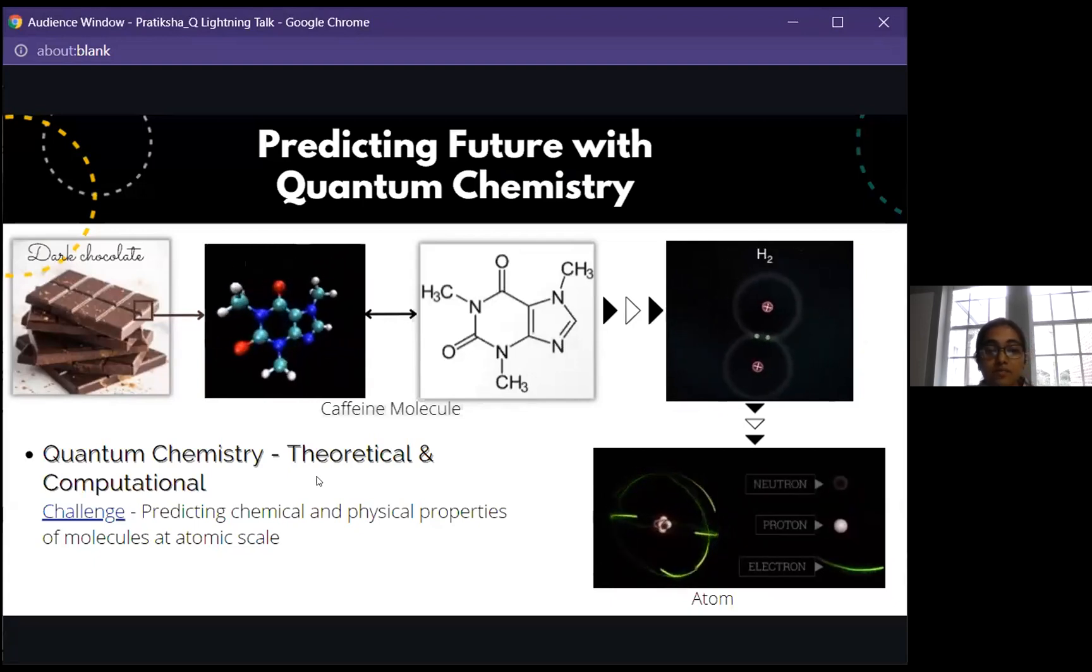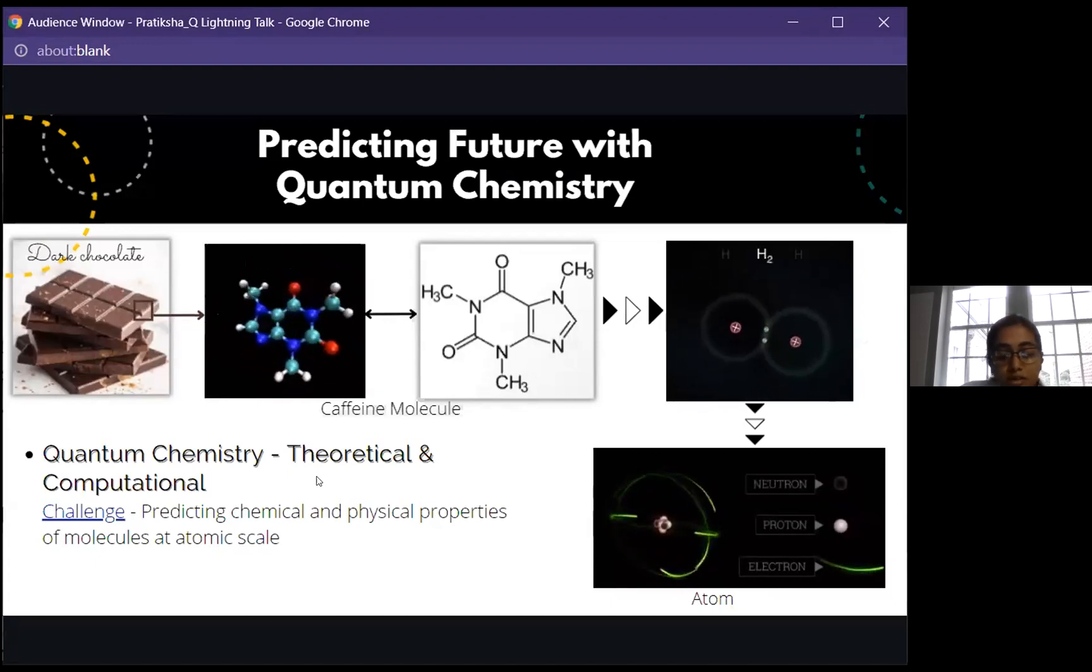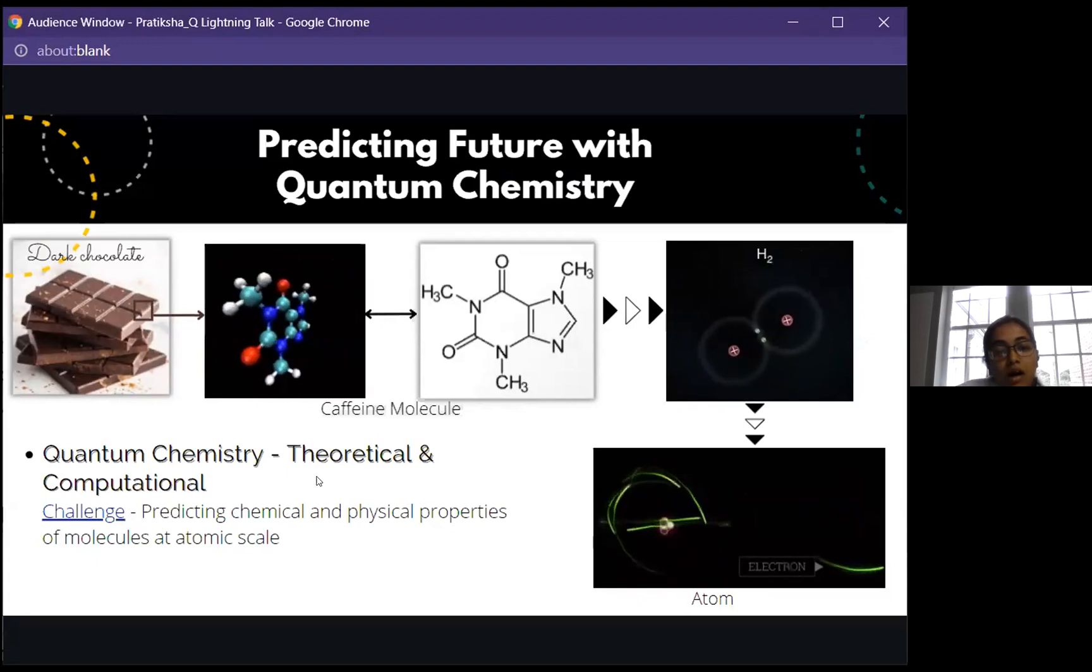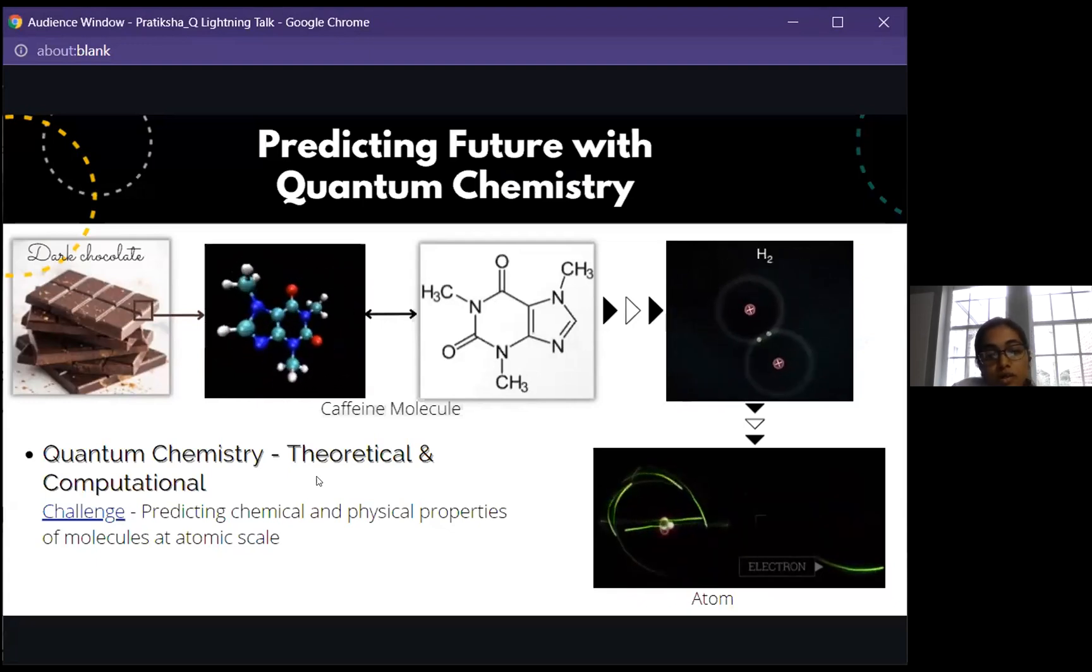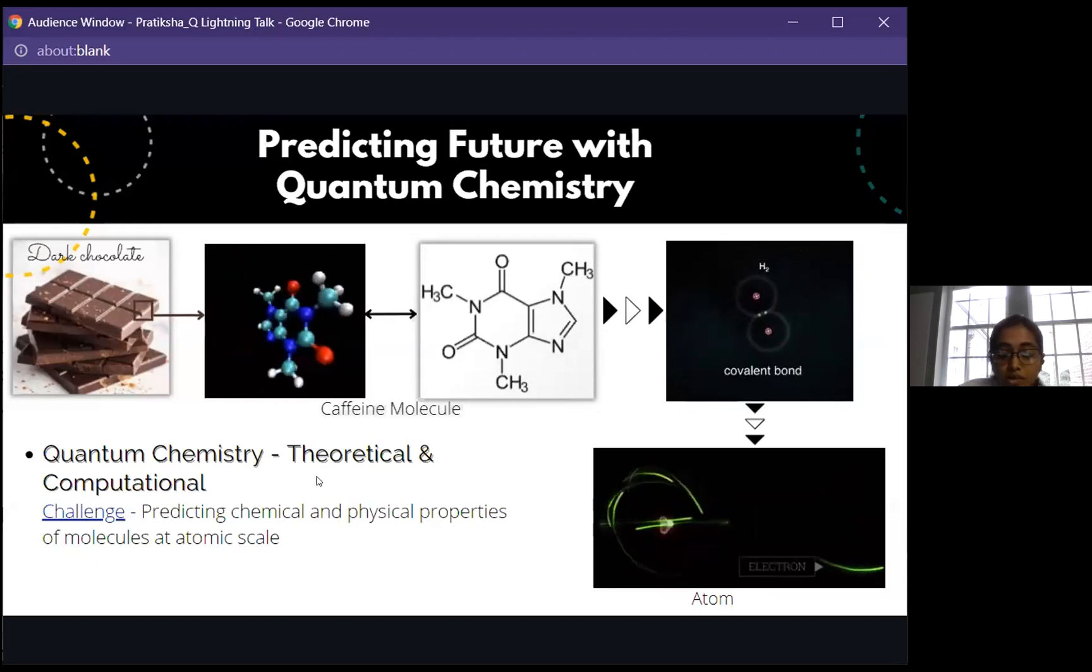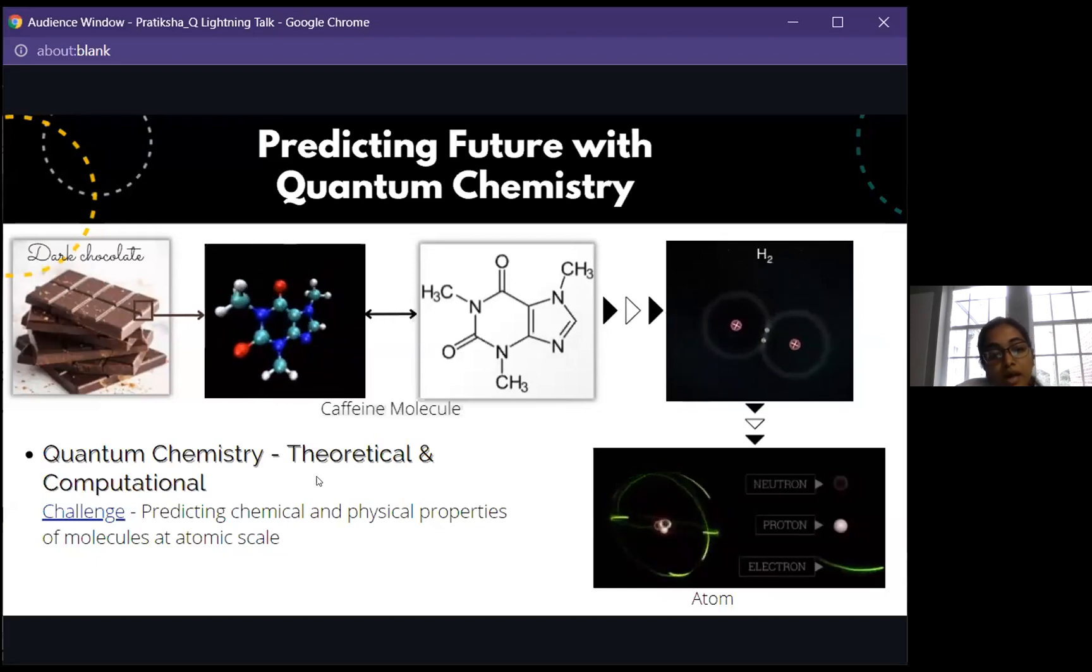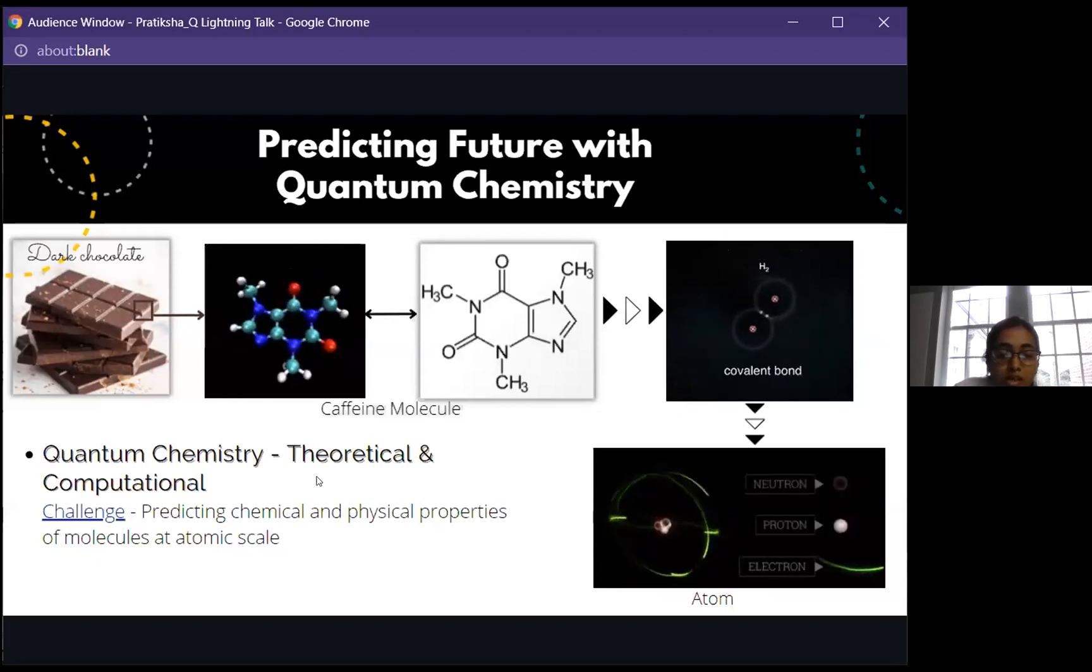As you can see the structure, it has different atoms like nitrogen, carbon, hydrogen and oxygen which are connected through various bonds where atoms share their electrons among themselves. It's really important to understand the nature of any molecule or any system, you need to study those chemical reactions at electronic level. And here comes the field of quantum chemistry which can help us to predict the chemical and physical properties of molecules at atomic scale.